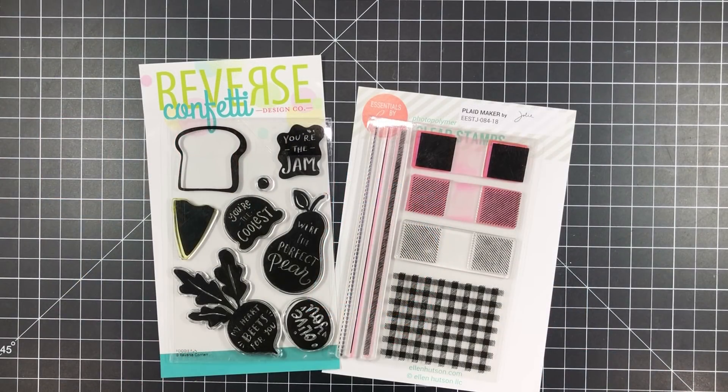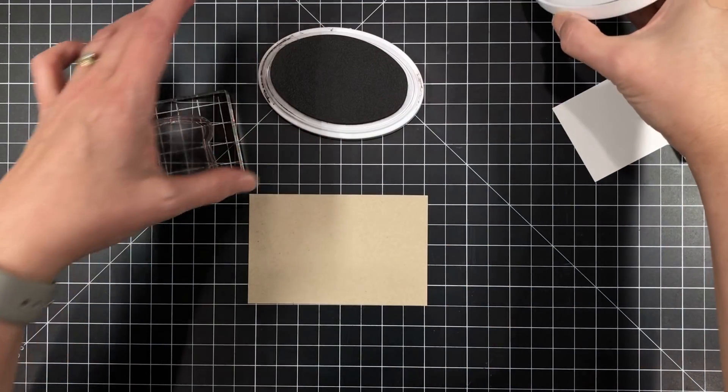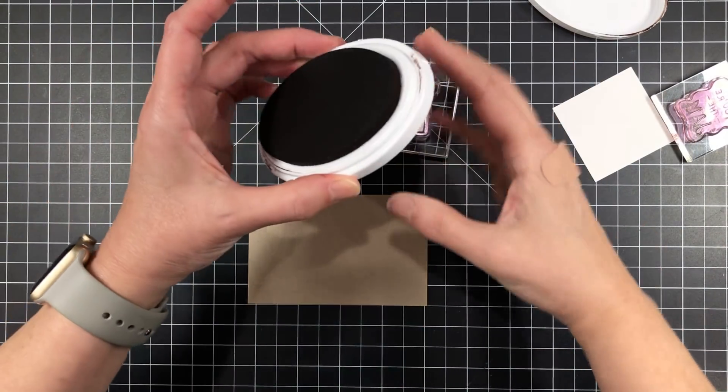I'm working with Reverse Confetti's Foodie Fun, which is an adorable set. I think it may have been intended for Valentine's Day, but I think it's a great way to say you love somebody any time of year. And I'm also going to be using the Essentials by Ellen Plaid Maker set to complement it.